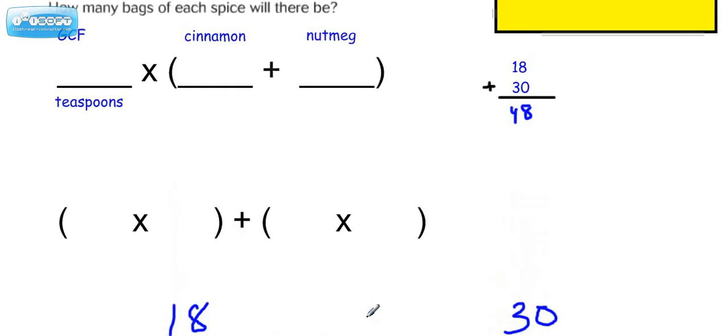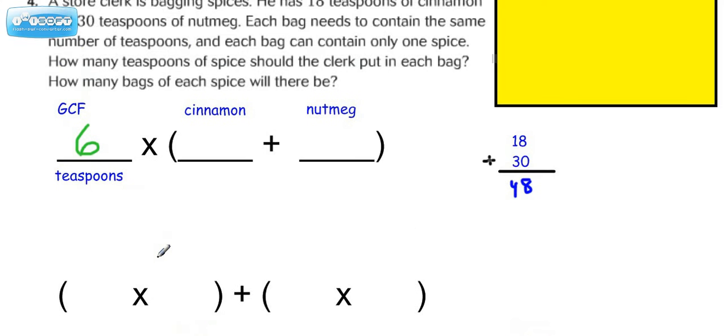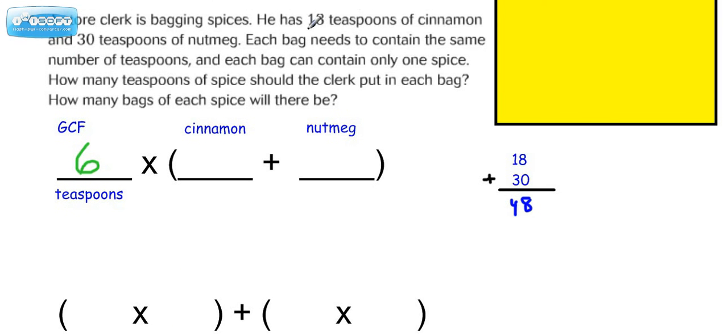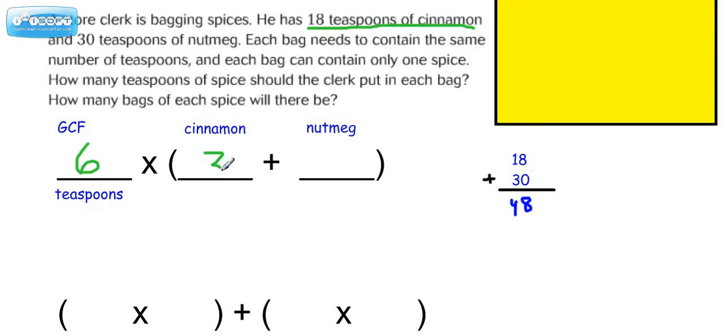Alright, so now let's talk about where we're going to put the 6. We're going to put the GCF on the outside of our setup here, because that's going to represent the number of teaspoons. Alright, so now we have to ask ourselves, because remember we had 18 teaspoons of cinnamon. 6 times what would be 18? The answer to that is 3. Now let's look at our other number, 30 teaspoons of nutmeg. 6 times what is 30? The answer would be 5.